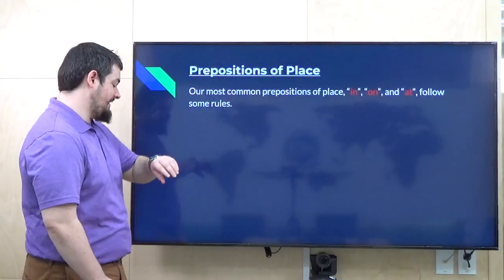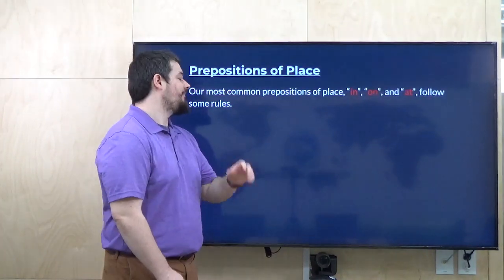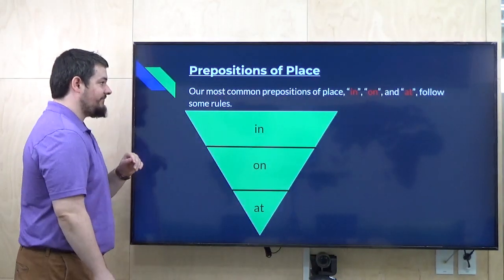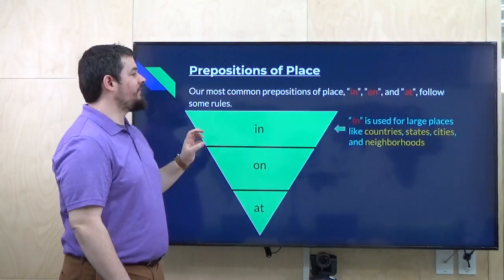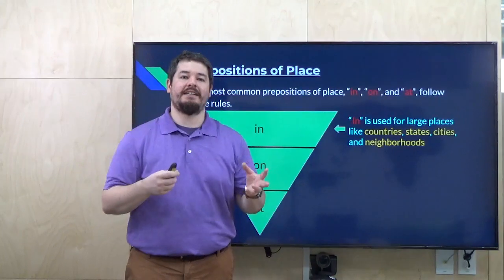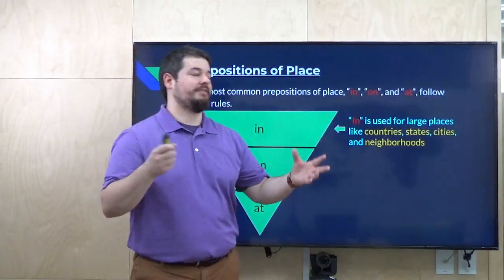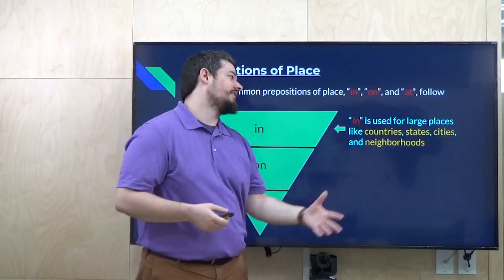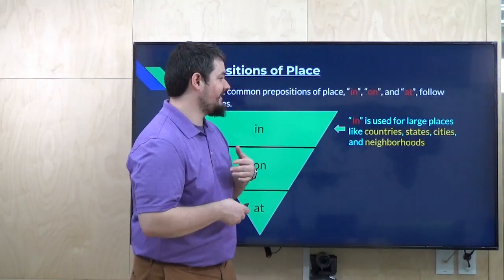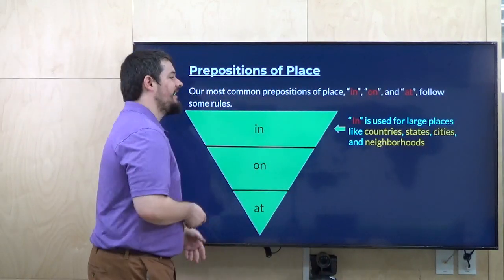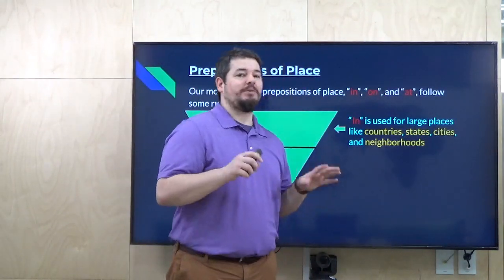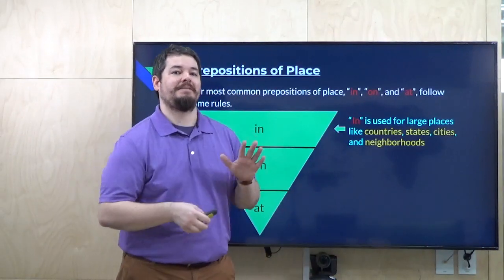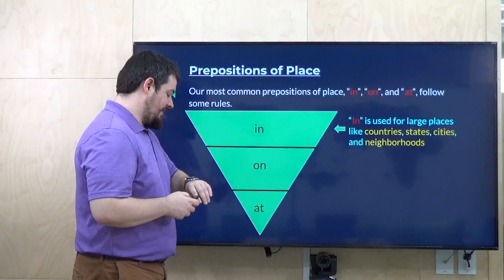Our most common prepositions — in, on, and at — follow some rules. 'In' is for big places: think countries like Korea or the USA, states like Michigan, cities like Daegu, Busan, or Seoul, and neighborhoods. For example, Youngjin is in Bokyeongdong. Bokyeongdong is a neighborhood. If you live in New York, you might think Manhattan, Brooklyn, Bronx neighborhoods.